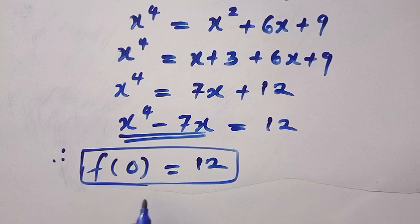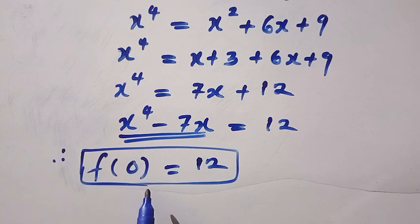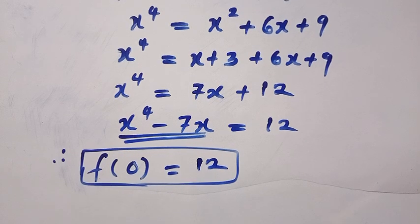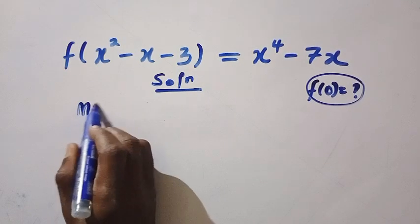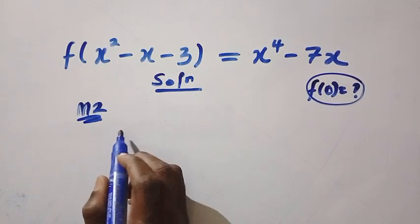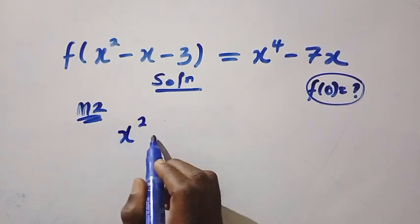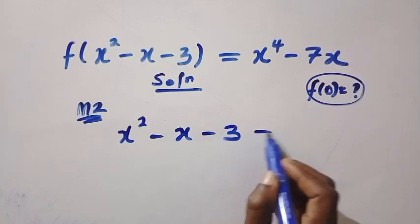You like what you see? Let's get into the second method — this is the one that will blow your mind. For the second method, again, if I let x squared minus x minus 3 equal to 0.